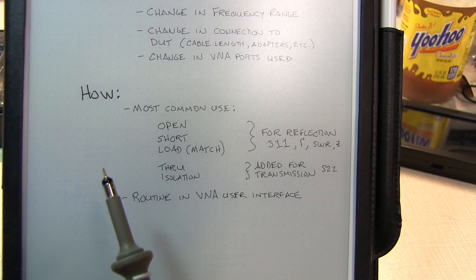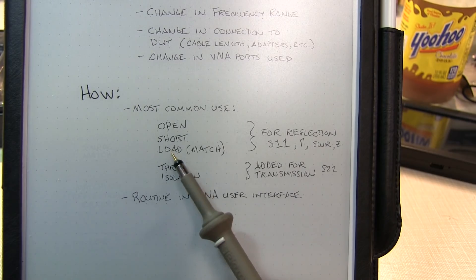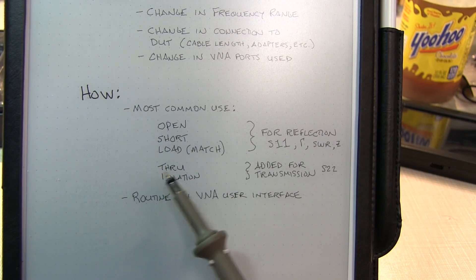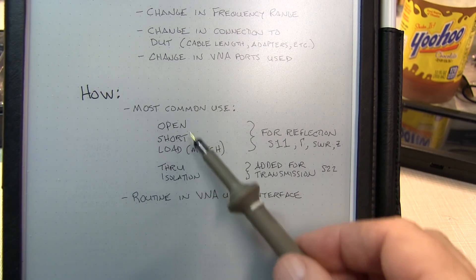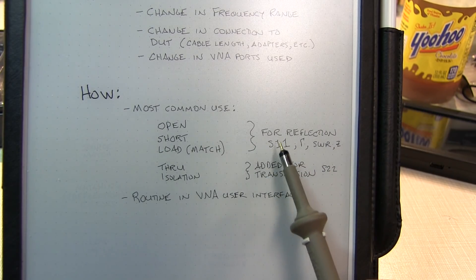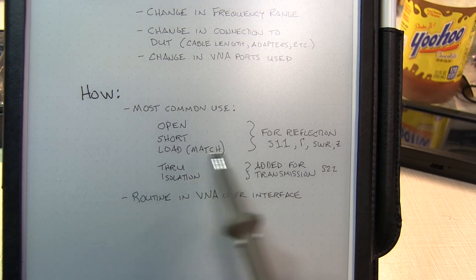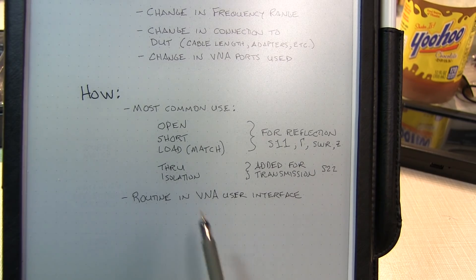So let's take a look at how you perform a user calibration. Most VNAs will have a routine that's built into the user interface and will involve making a number of measurements. Making measurements with a known open, a known short, a known load or match termination, and also do a through and isolation measurement. These first three, the open, short, and load, or open, short, and match, are the standards that are used when measuring reflection parameters such as the reflection coefficient or S11, SWR, impedance measurements. These are the only ones you need to do if all you're doing are reflection measurements on a single port of the VNA. If you're going to be making through measurements, like on a filter or an amplifier and use both ports of the VNA, then you have to add doing a through and isolation measurement to remove those sources of error as well.